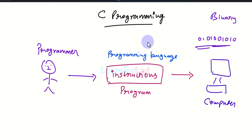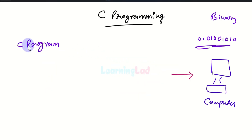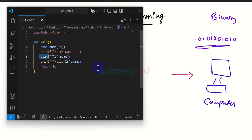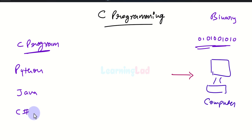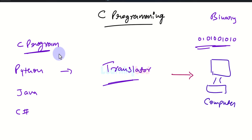So how will this work? We have the program written in C programming language — we call this the source code. This program could be in any other programming language, such as Python, Java, or C#. All these languages are close to human-readable form and computers don't understand them. So what we have to do is use a translator to convert the code from human-readable format to machine language or binary language which the computer understands.